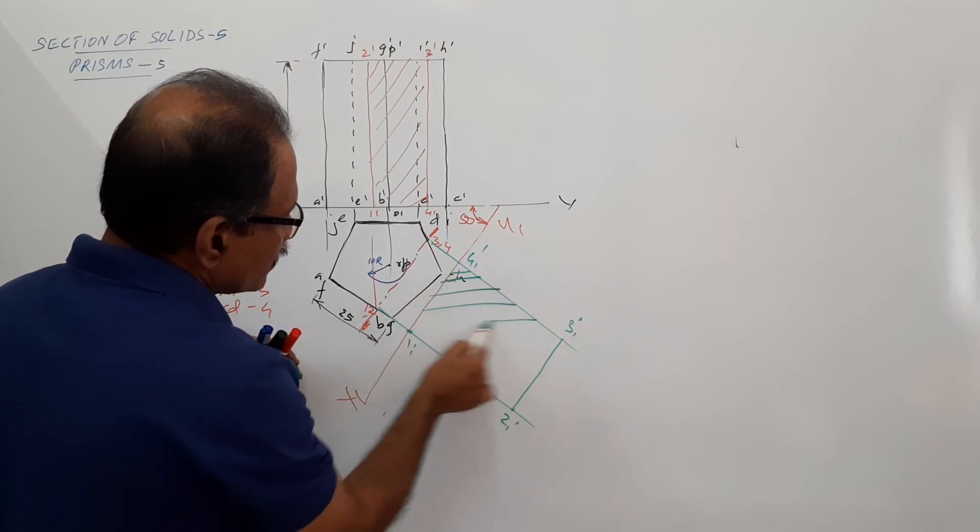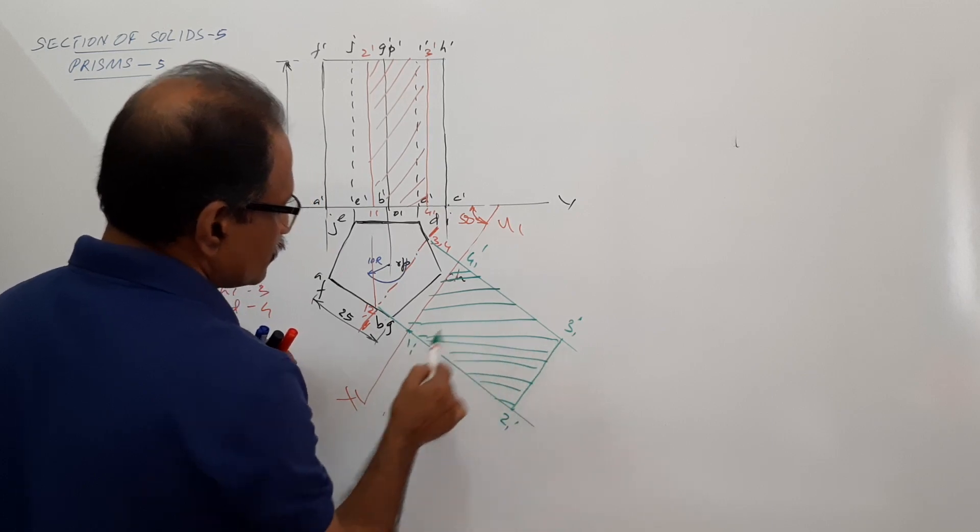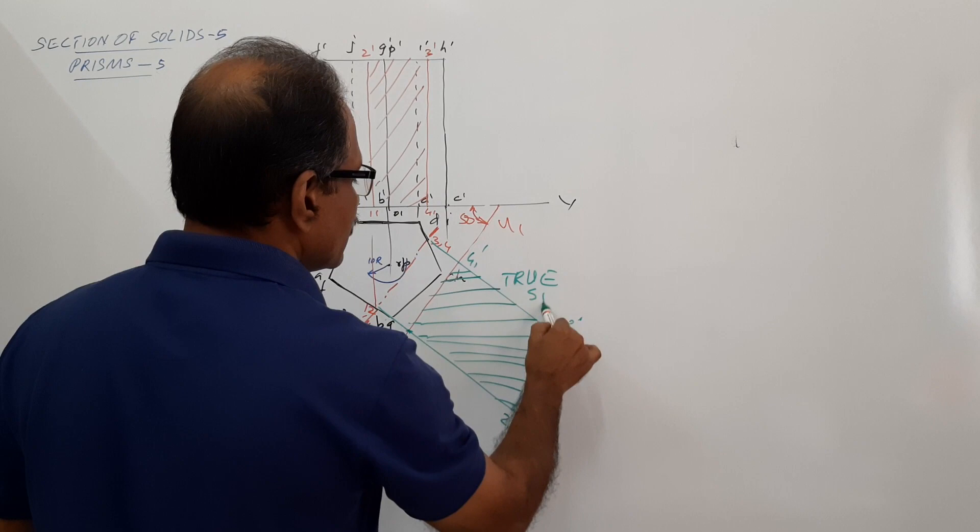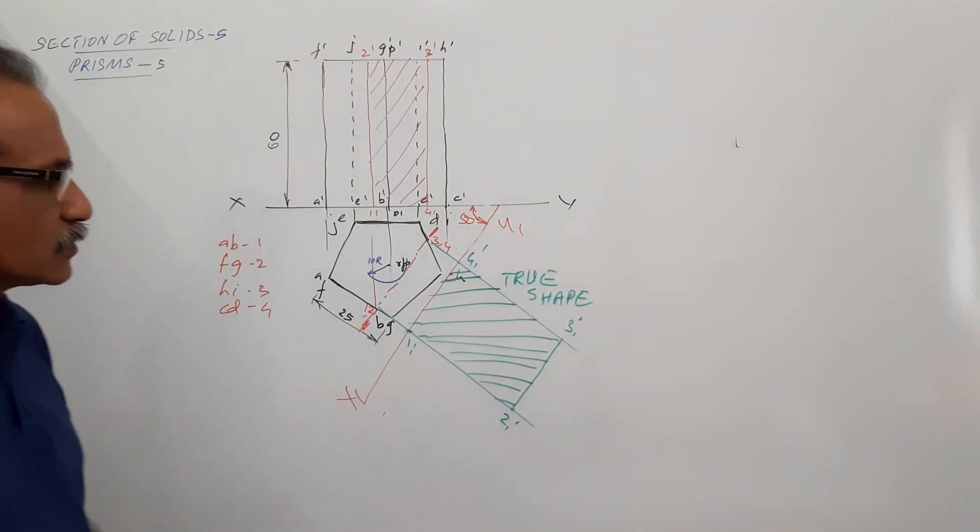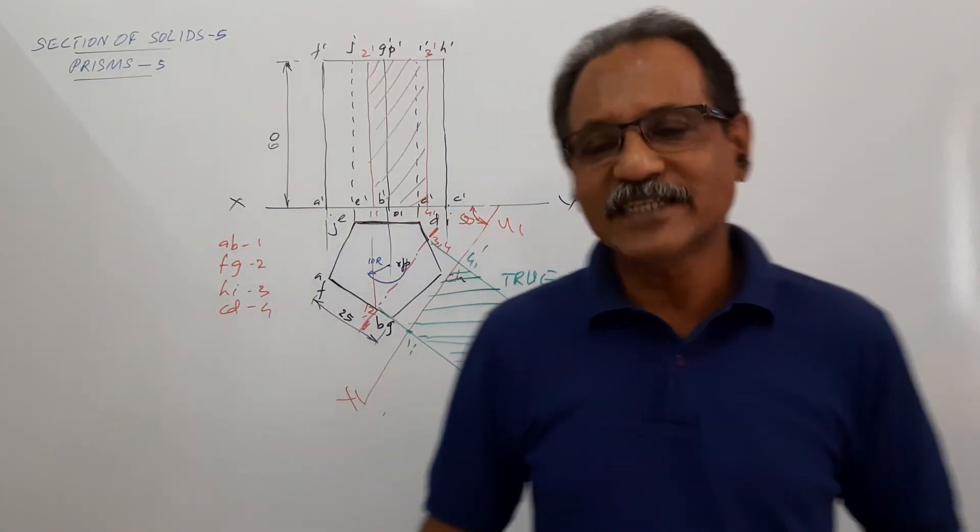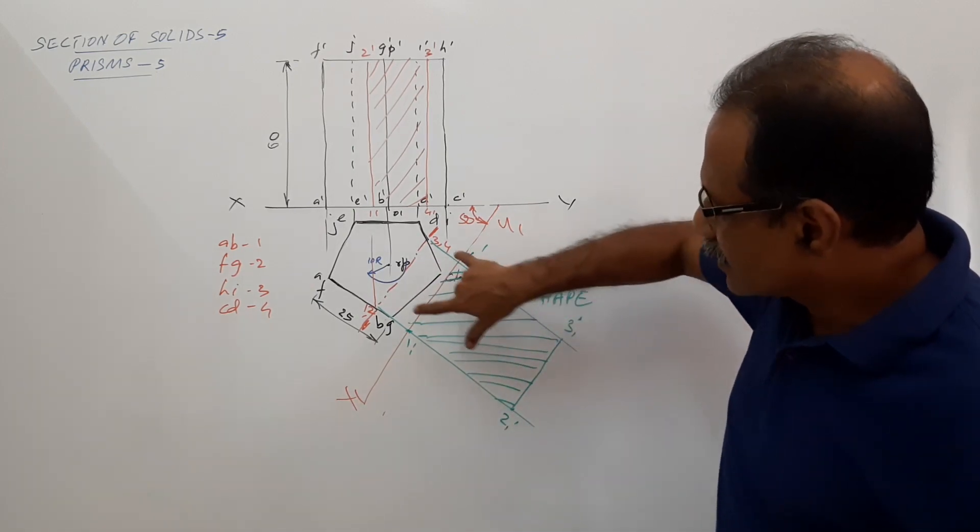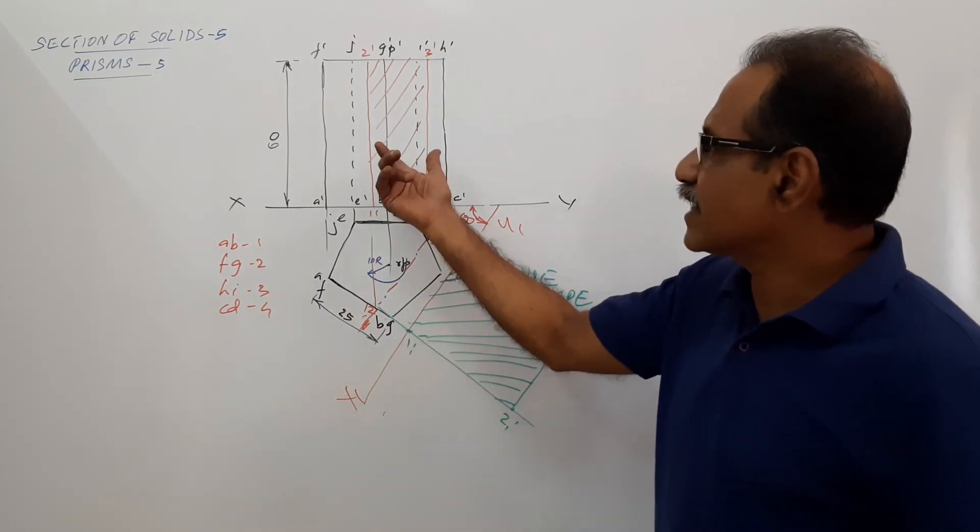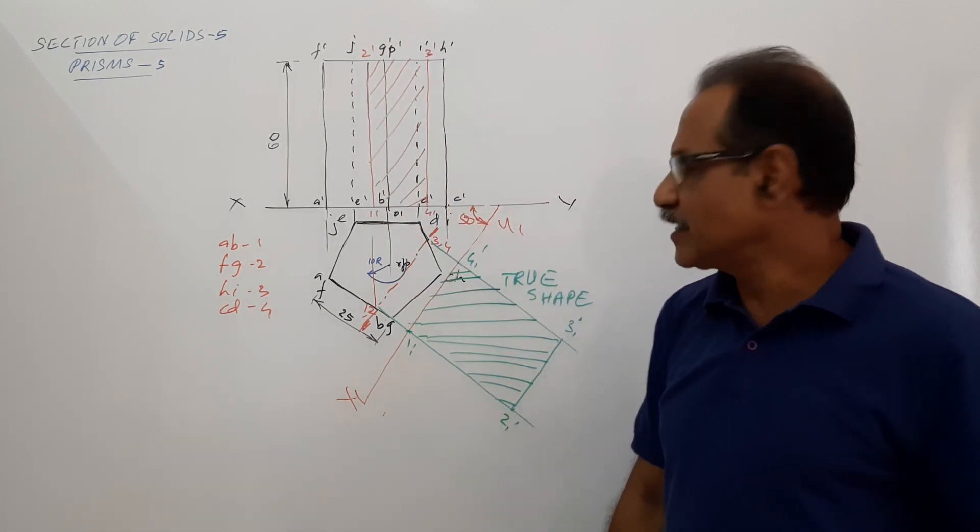This is true shape. What is its shape? Shape is a rectangle. Height is equal to axis height, and length is equal to the length of the cutting plane through the prism. This is a rectangle but narrow, height is high but width is less. Thank you.